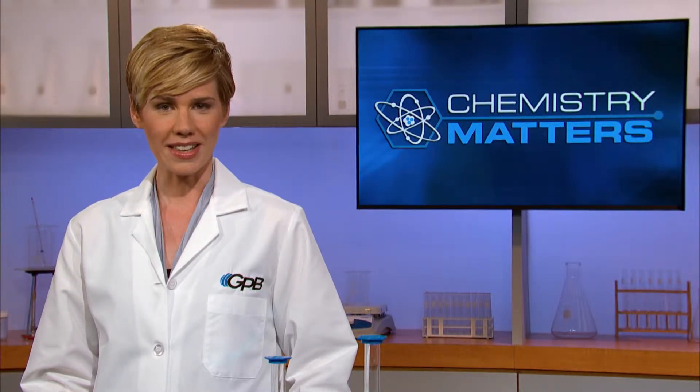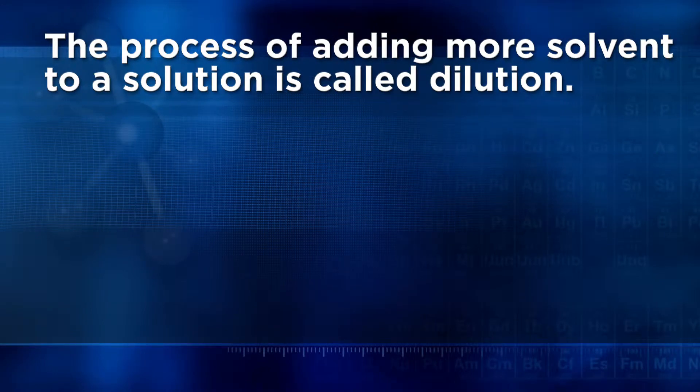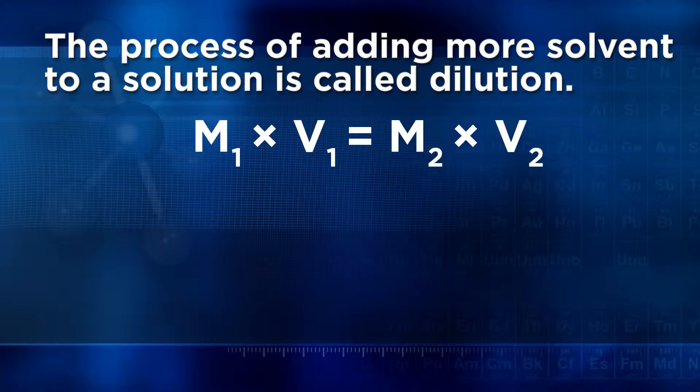This happens quite a bit in the chemistry lab too — not to produce solutions that are more dilute so we can drink them, but to take a concentrated, or sometimes referred to as stock, solution and lower its concentration to a more suitable level. This procedure is known as dilution. The way that chemists achieve this is through the dilution equation, which is represented by M1 times V1 equals M2 times V2.